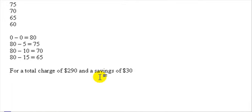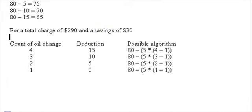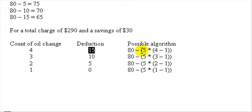Since the number of oil changes is 4, we can use that number to calculate the deduction. The count of the oil change is 4, so the deduction would be 15. The possible algorithm would be 80 minus $5 times the count of the oil change minus 1 — so 3 times 5 gives us the deduction of $15, subtracted from 80 to give us the $65 charge for that particular oil change.